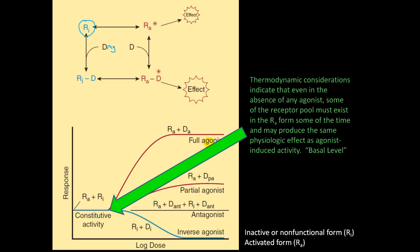And this is kind of a key point here. So thermodynamic considerations indicate that even in the absence of an agonist, so if you don't have an agonist on a receptor, this still happens. Some of the receptor pool must exist in an active form some of the time, and may produce the same physiological effect as an agonist-induced activity. This is called basal level.